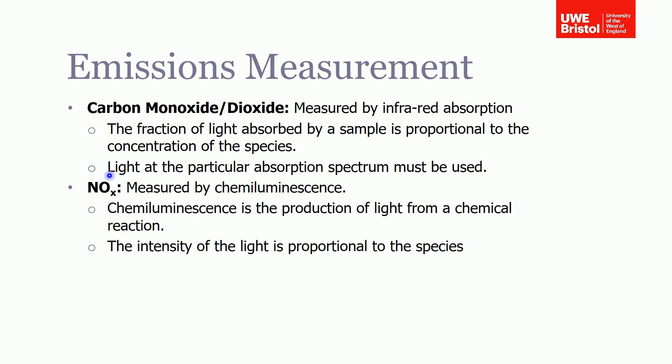NOx is measured slightly differently. It's measured by what's called chemiluminescence, which is the production of light from a chemical reaction. For example, the nice blue flame you see when burning methane on a gas stove — that's chemiluminescence. If you can measure the light at the particular wavelength for the species, which in this case is NOx, then the intensity of light is proportional to the amount of NOx present. So the more NOx there is, the higher the light signal you'd get from your measurement device.